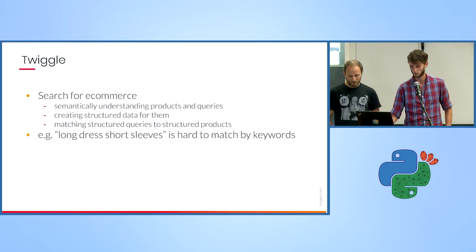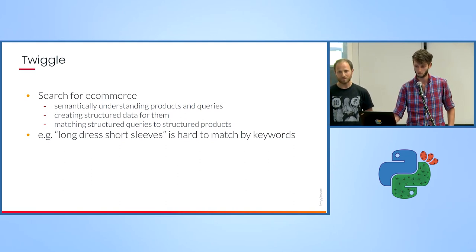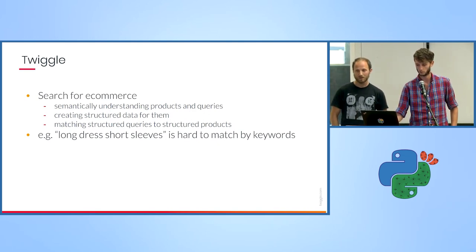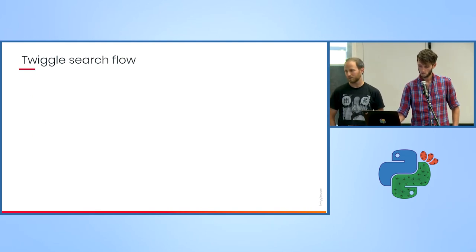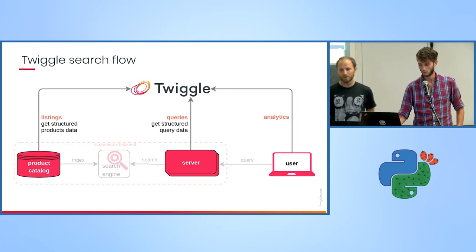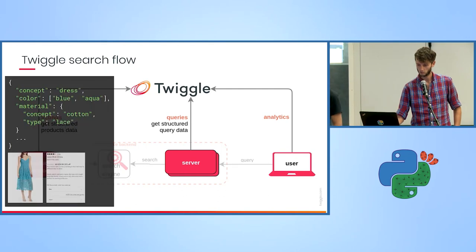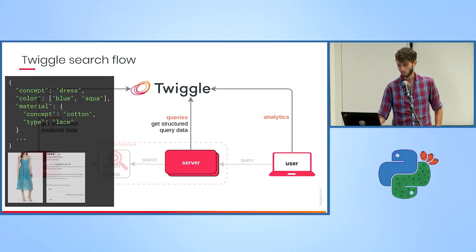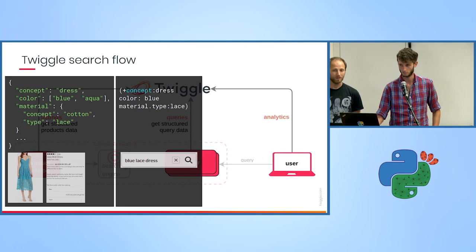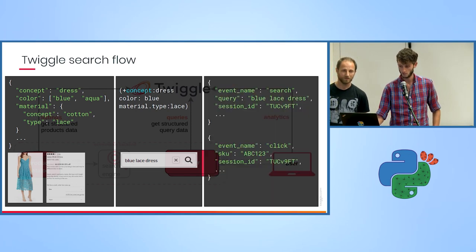An example is the query 'long dress short sleeves', which is hard to match by keywords because 'long' and 'short' are negated. But when we understand context it's much easier to match. Our flow looks a little bit like this: our customers get structured data from us which they index in their search engine. When an end user queries their server, they'll query us and we'll send them some structured data for the query, they'll use that to match relevant results, and the end user sends us analytics for us to improve our NLP engine.